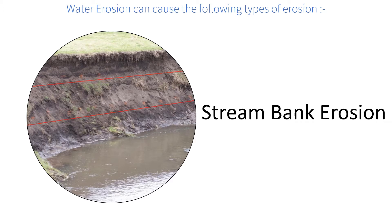Stream bank erosion occurs when the continuous flow of water erodes the banks of streams and rivers. This type of erosion is very prevalent in the flood plains of the Ganga, Yamuna and other rivers. As a result, stream bank erosion leads to large-scale erosion of agricultural lands in the states of Uttar Pradesh and Madhya Pradesh, transforming several areas into ravines.